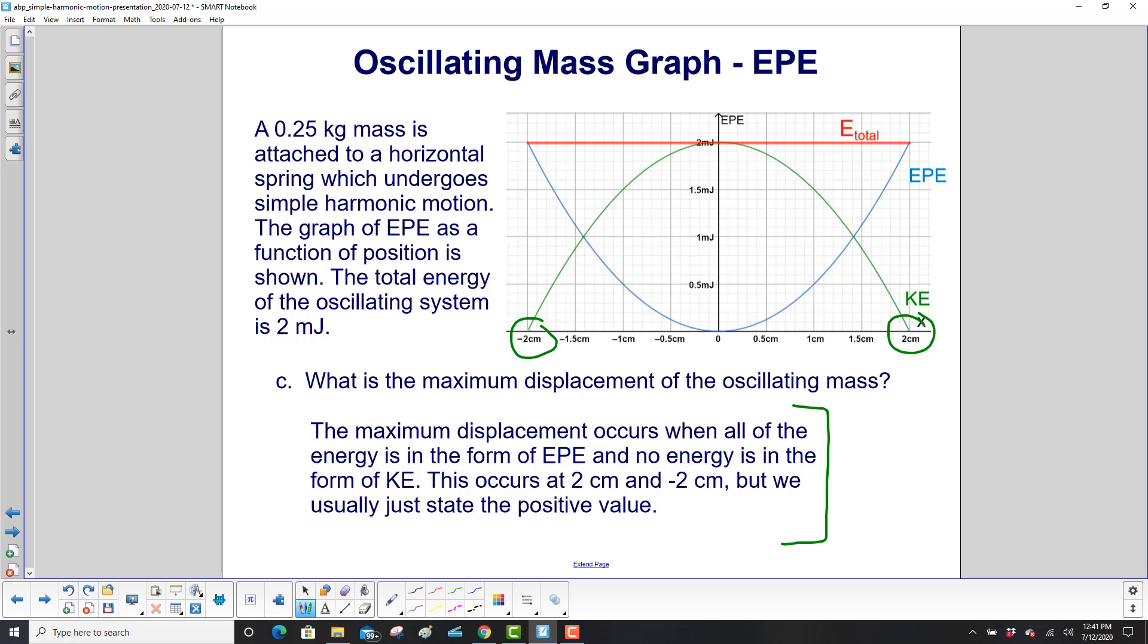So the maximum displacement occurs when all of the energy is in the form of EPE and no energy is in the form of KE. It occurs at two centimeters and minus two centimeters, but normally we just state the positive value.